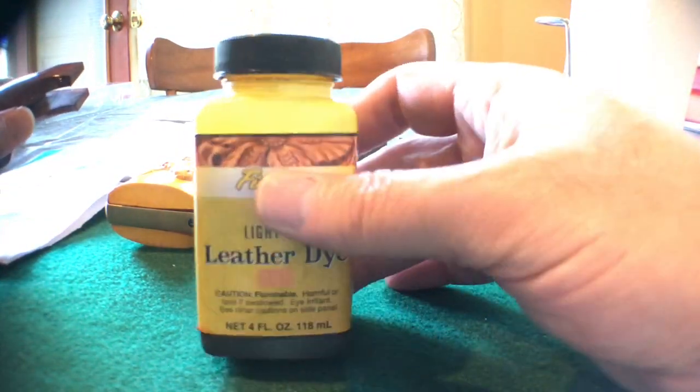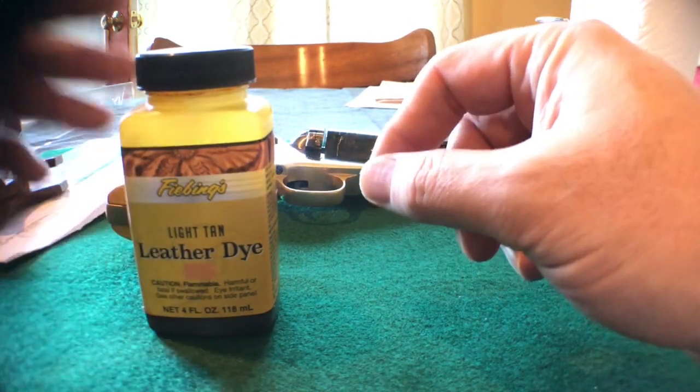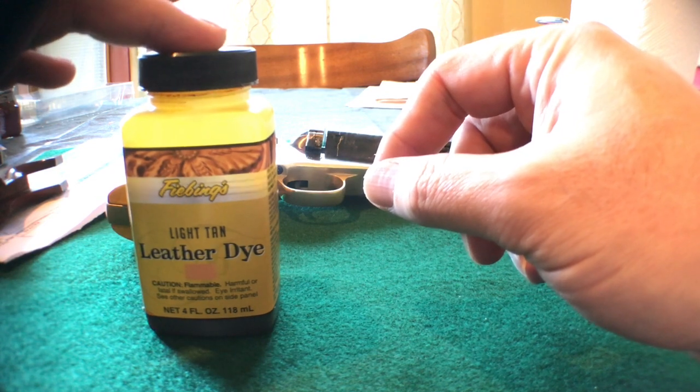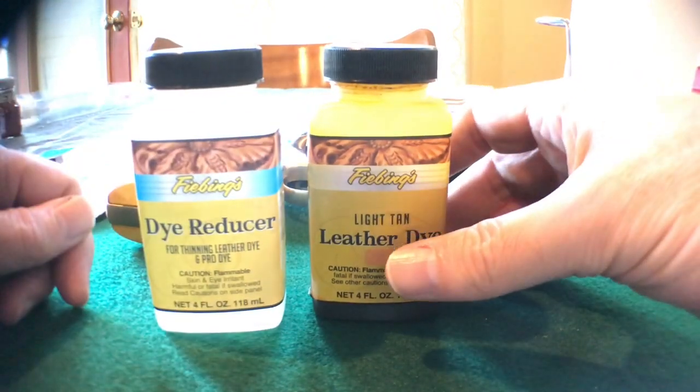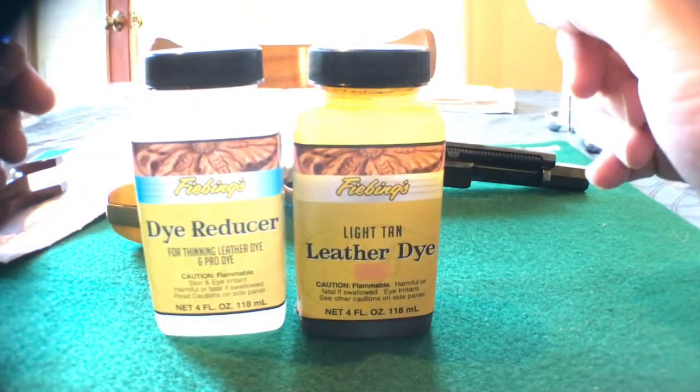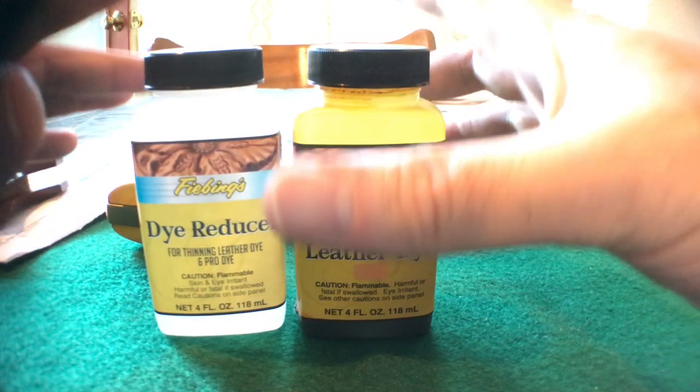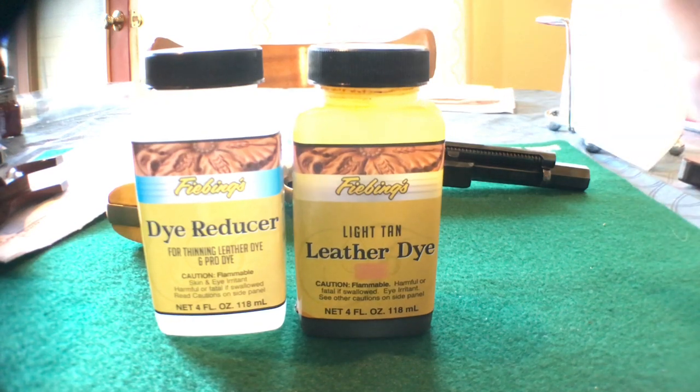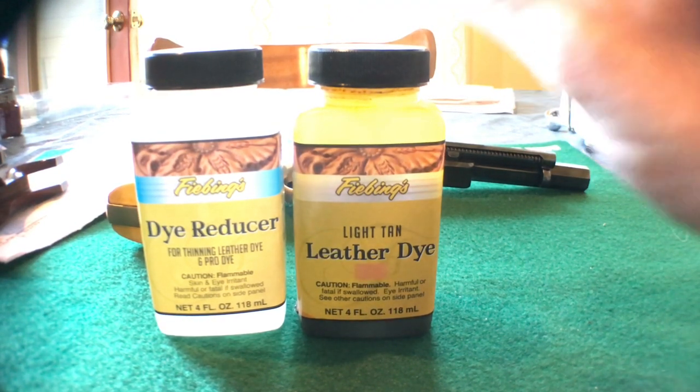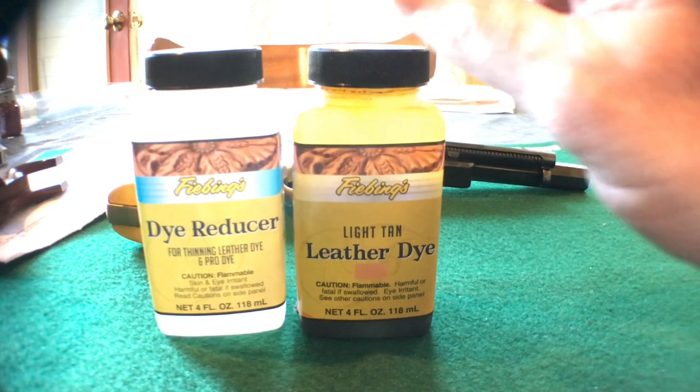This dries very bright, very almost neon. So what I did was, I also had some Fiebing's dark brown. What I mixed was six parts light tan, one part of dark brown, and then I cut that in half with dye reducer, basically a thinner for this dye.